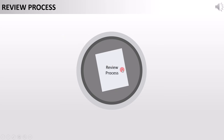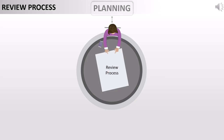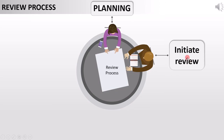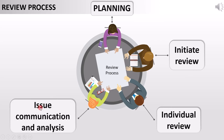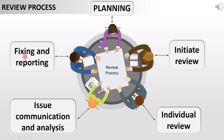First, we will see the different activities of the review process, and then I will provide a detailed explanation of each activity. The review process starts with planning. Once planning is done, we initiate the review process. After that, team members review the work product. If they find any defects, they communicate it to the responsible person, and analysis of the defect starts. Once the team concludes the defect needs a fix, the issue is reported and fixed. So these are the five activities: planning, initiate review, individual review, issue communication and analysis, and fixing and reporting.